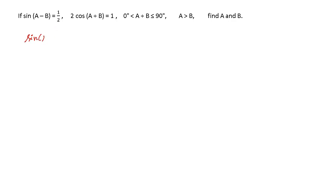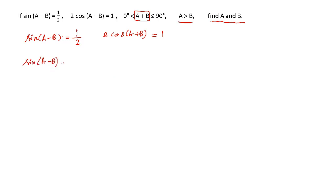Here, sin(A − B) = 1/2 and 2·cos(A + B) = 1. It is also given that A + B is between 0° and 90°, and angle A is greater than angle B. We need to find angles A and B. Starting with the first equation: sin(A − B) = 1/2. From the table, sine equals 1/2 at 30°, so sin 30° = 1/2. On comparing both sides, A − B = 30°. Let's call this equation 1.